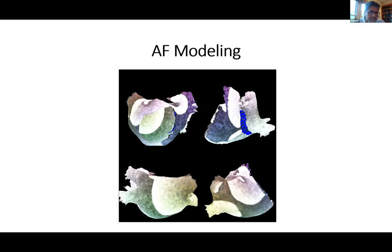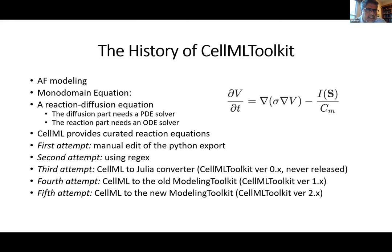In AF modeling, you get a 3D model from a CT scan, add the ionic model from CellML, incorporate the structure, and do 3D modeling using single-domain or bi-domain reaction-diffusion equations. The reaction part comes from the ODE solver — from the CellML model — and the PDE handles spatial propagation. My focus was on getting the PDE solver correct. The last thing I needed was to worry about the validity of the ionic model, which is why I really appreciate CellML — I could rely on those models and focus on getting the Laplacian and PDE solution right.